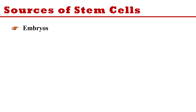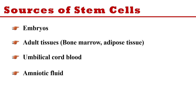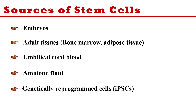Now the sources — from where you can get stem cells. You can get embryonic stem cells from the blastocyst stage of the embryo. Adult stem cells can be obtained from adult tissues like bone marrow and adipose tissue. The umbilical cord also contains stem cells, and amniotic fluid is also rich in stem cells. Finally, you can genetically reprogram cells to become induced pluripotent stem cells.